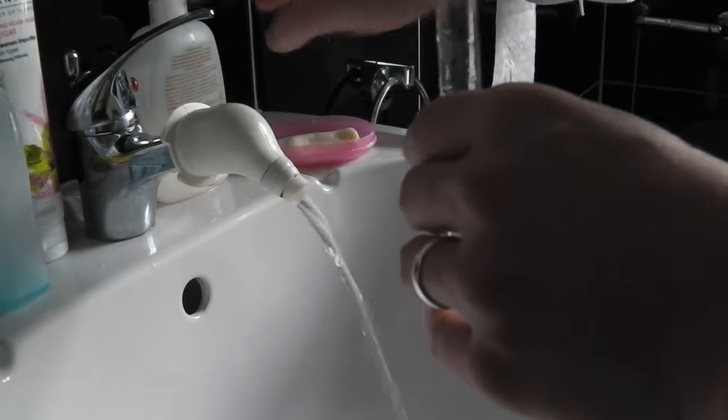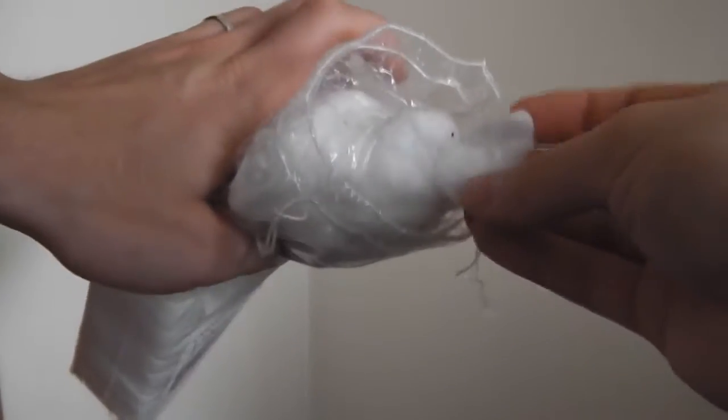Once you have it, it should look something like that. Then you're going to need some cotton. Get a large enough piece and tear it up if you need it to be smaller. Just try to use the right amount for your test tube size.